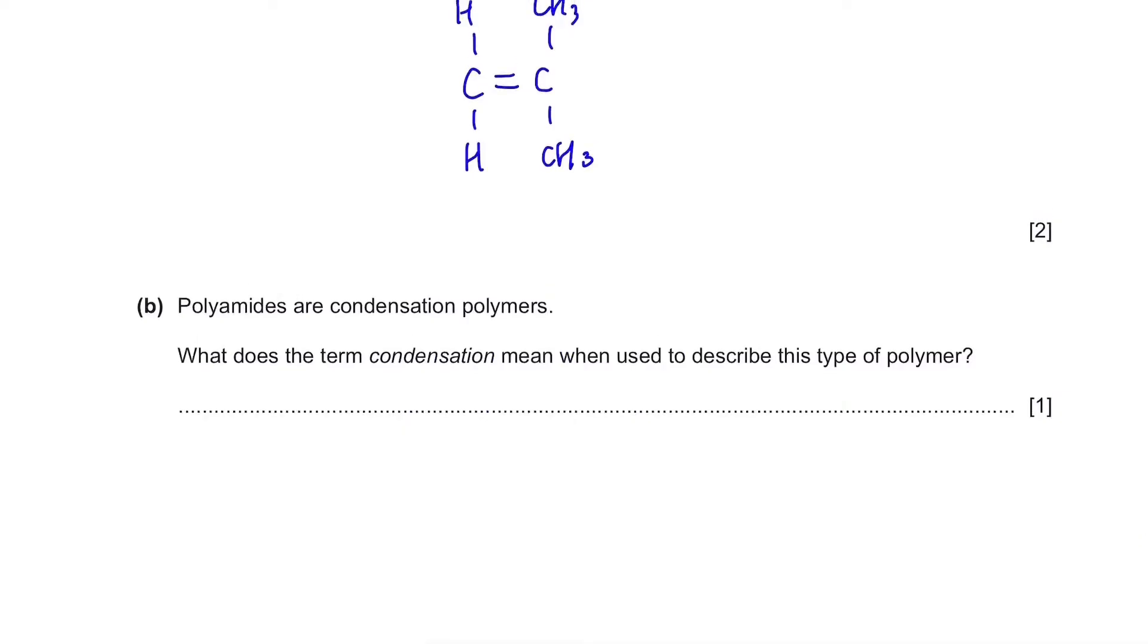Part B. Polyamides are condensation polymers. What does the term condensation mean when used to describe this type of polymer? So this condensation is used only when the product is water. So if you don't get water as a product, you can't call that polymer a condensation polymer.